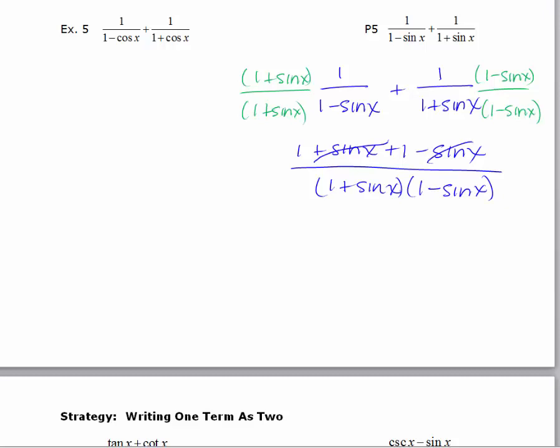And it looks like nothing will cancel because the sines will cancel. But I end up with a 2 in the numerator which will not cancel with either of these. So I will multiply this out. Again, using a plus b times a minus b equals a squared minus b squared will give me 1 minus sine squared x.